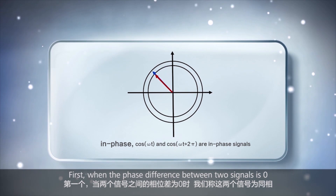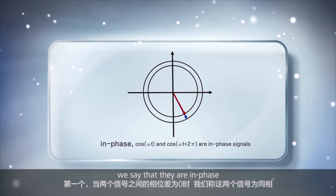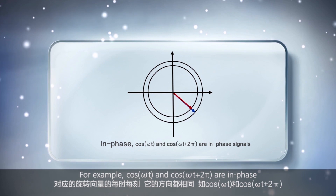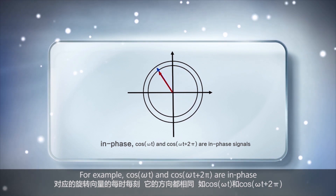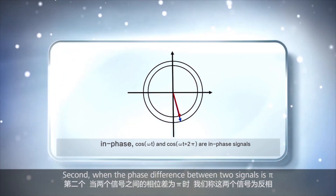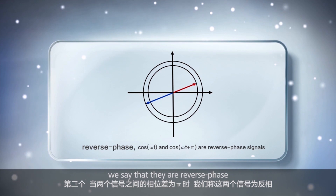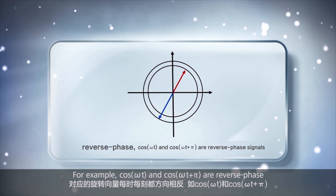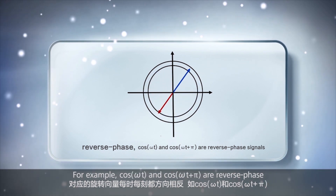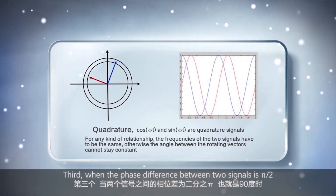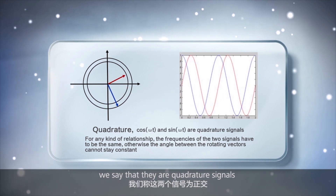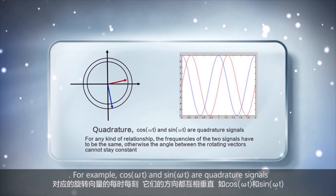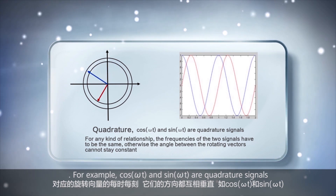Now let's have a look at three special relationships between the phases of two signals. First, when the phase difference between two signals is zero, we say that they are in phase, and the corresponding rotation vectors are always in the same direction. For example, cos(ωt) and cos(ωt + 2π) are in phase. Second, when the phase difference between two signals is π, we say that they are in reverse phase, and the rotation vectors of each signal are in opposite directions. For example, cos(ωt) and cos(ωt + π) are reverse phase. Third, when the phase difference between two signals is π/2, we say that they are quadrature signals, and the rotation vectors of each signal are perpendicular to each other. For example, cos(ωt) and sin(ωt) are quadrature signals.